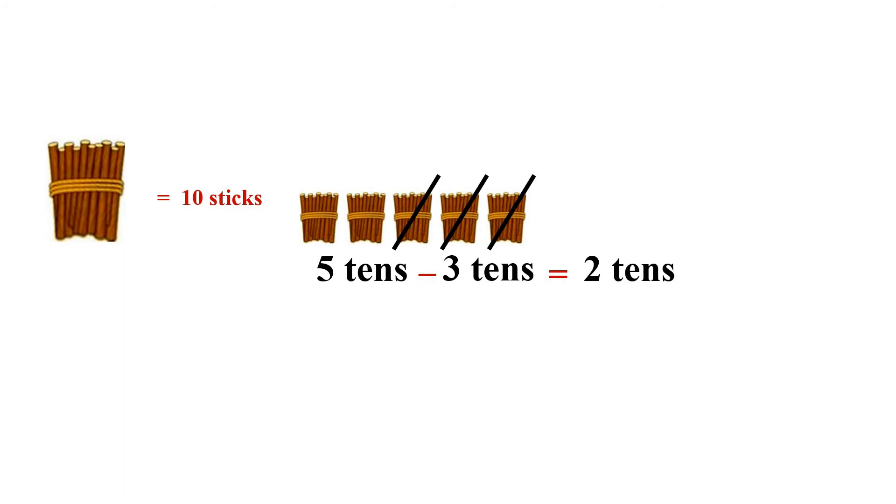So two tens bundles are left. Let's do it another way. Five tens means fifty minus three tens means thirty. So fifty minus thirty is equal to two tens means twenty.